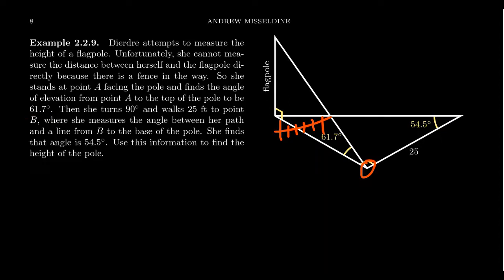Then she's going to turn 90 degrees from her current point, and she's going to walk 25 feet along perhaps a sidewalk on the side of the fence, and then she's going to make another angle measurement, which turns out to be 54.5 degrees at point B. We have B right here, point A right there. So using this information, how could she calculate the height of the flagpole?